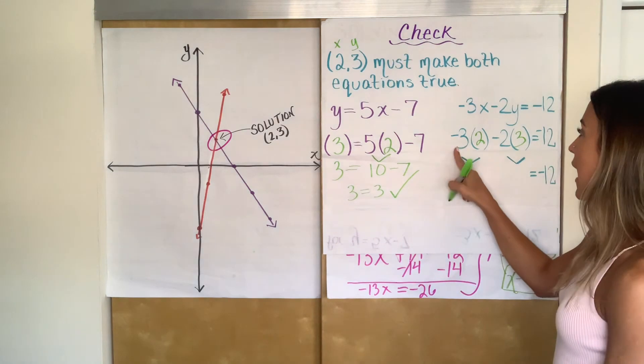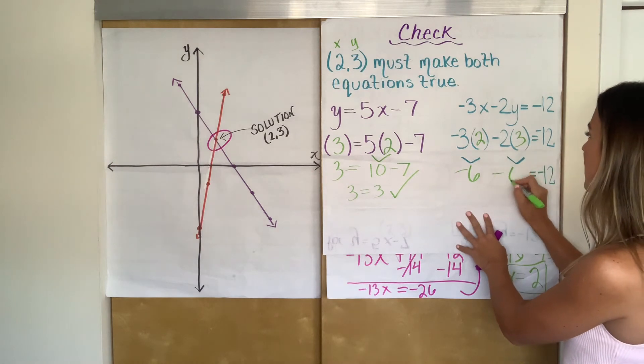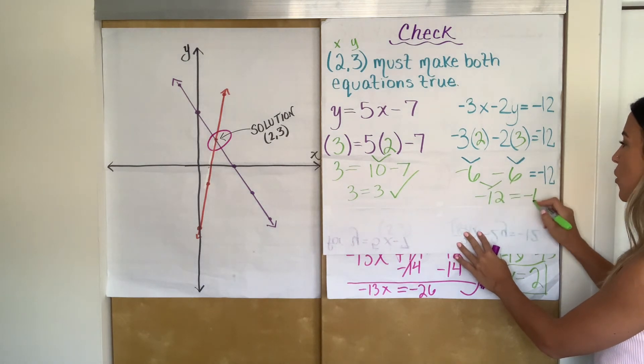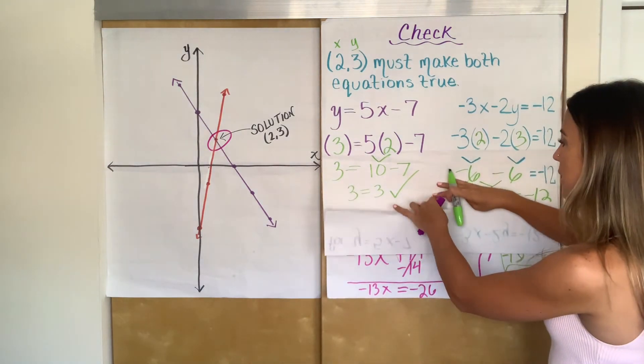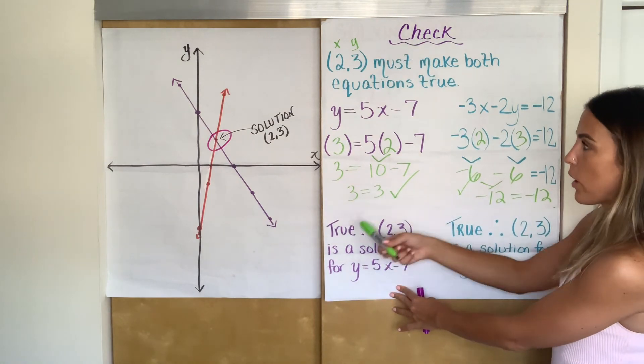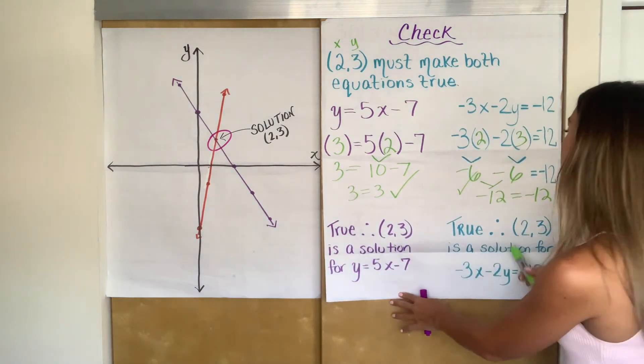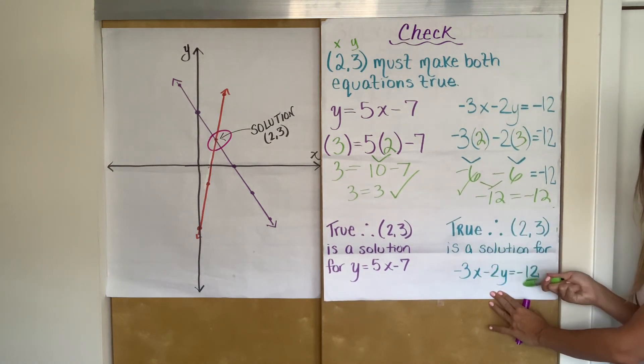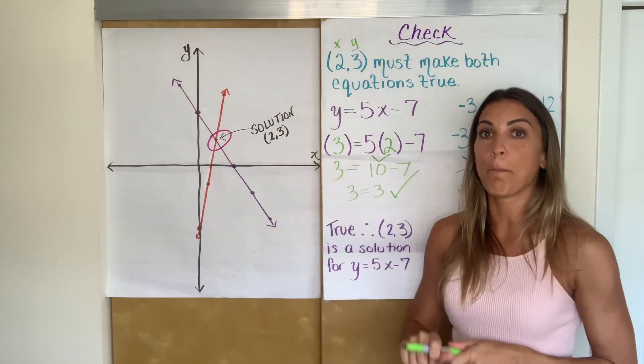And let's see if we get something true again. Negative 3 times positive 2 is negative 6. Negative 2 times negative 3 is negative 6. Bring down my equals negative 12. Negative 6 minus 6 is negative 12. So now I have negative 12 equals negative 12, which is another true statement. So what happens is because the ordered pair made this equation true, if you don't know those three dots mean therefore. So what I'm writing is this is true. Therefore, 2, 3 is a solution for this line, Y equals 5X minus 7. Now negative 12 equals negative 12 is also true. Therefore, 2, 3 is a solution for this other equation. And if it's a solution for both of these equations, then it's the solution of the system. So you have to prove that it's a solution for both of them.